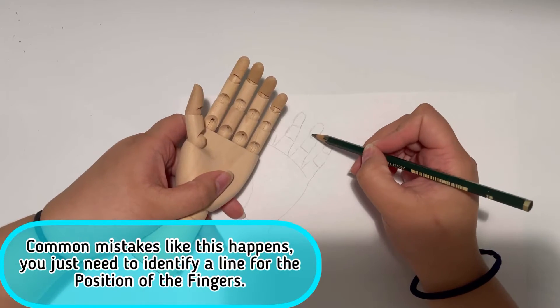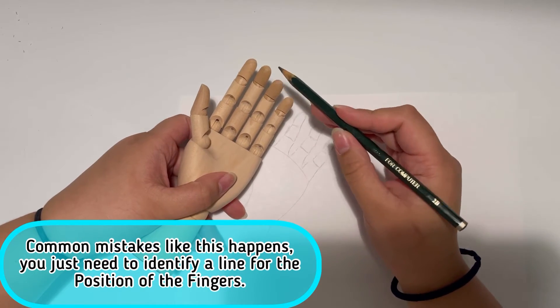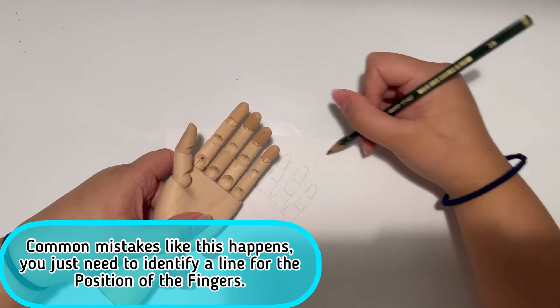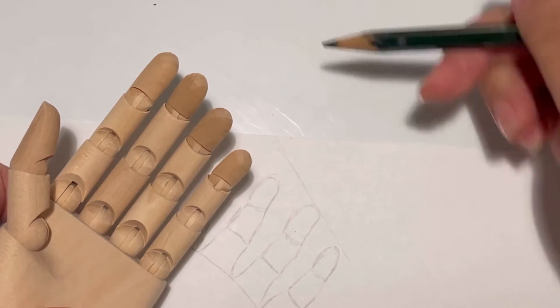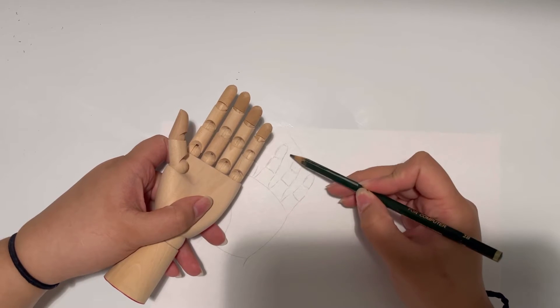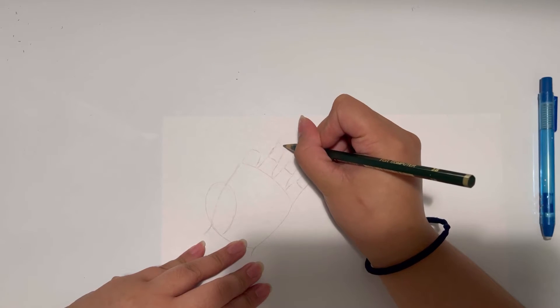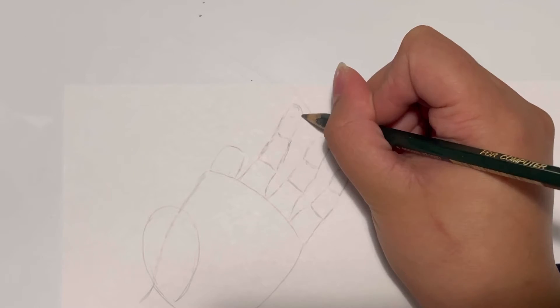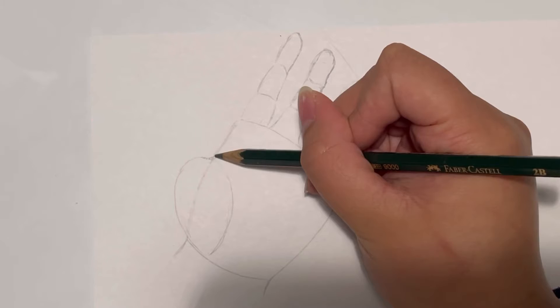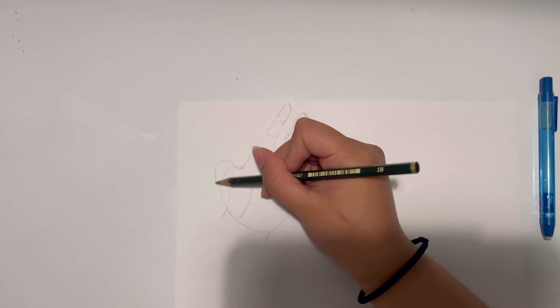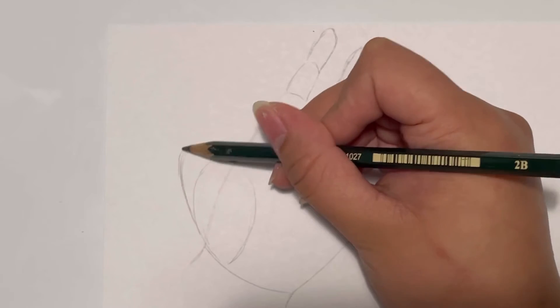So common mistakes like this happen. You just need to identify a line for the position of the fingers, like what I'm showing you right now. So sometimes, like I said, I don't really draw hands, so common mistakes really happen with me, but I am able to fix it in no time anyway. So yeah, as long as you have your lines and your shapes, then you'll be fine.